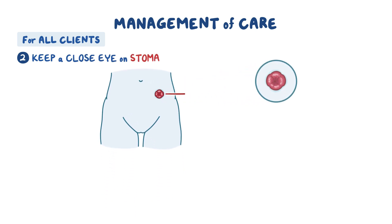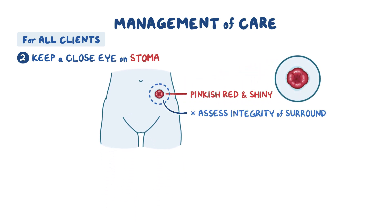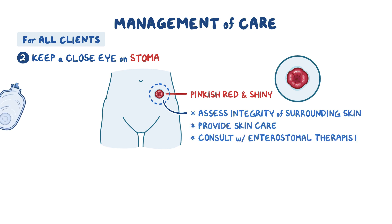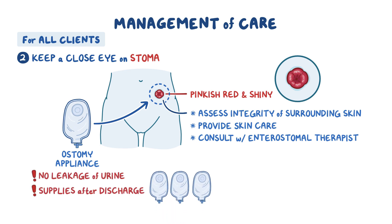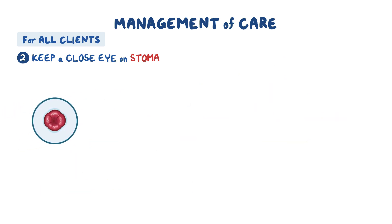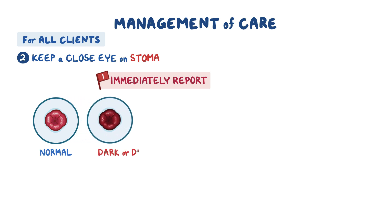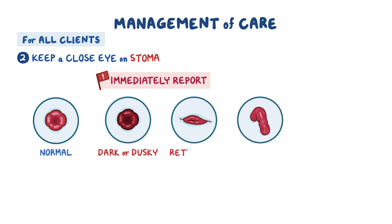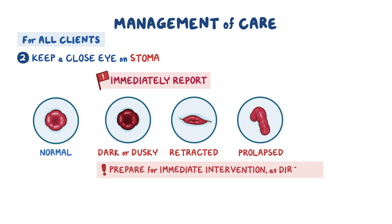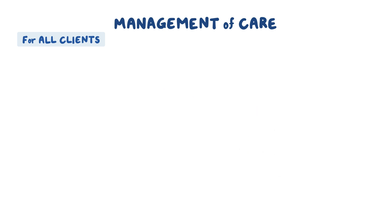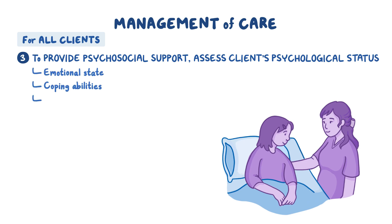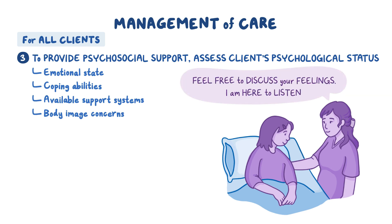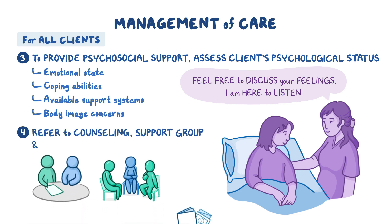Keep a close eye on the stoma to ensure it remains pinkish-red and shiny. Assess the integrity of the surrounding skin, provide skin care, and consult with the enterostomal therapist to ensure the ostomy appliance fits well, no urine leakage occurs, and the client has supplies needed after discharge. Immediately report if the stoma appears dark or dusky — a sign of insufficient blood supply — or if it becomes retracted or prolapsed. For psychosocial support, assess the client's emotional state, coping abilities, available support systems, and body image concerns; encourage open discussion and refer to counseling, support groups, and community resources as needed.